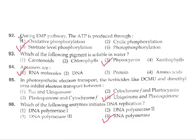Question 92: During the EMP pathway, ATP is produced through substrate-level phosphorylation. So the correct answer is option 3.